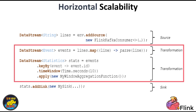Flink is built for scalability, and one of the techniques it employs is key-based partitioning. This means that you can instruct Flink to partition the data stream based on specific keys. For instance, if each event has a unique ID, Flink can extract this ID and use it to calculate a hash code. This hash code then determines which parallel Flink nodes will process the event. As a result, the incoming stream is efficiently distributed among the available servers in the cluster.